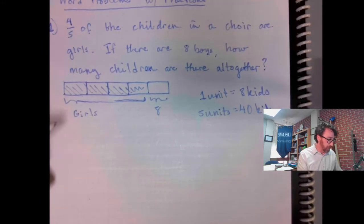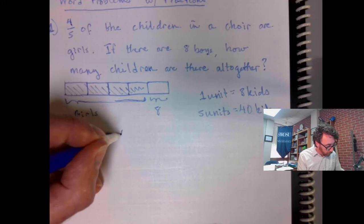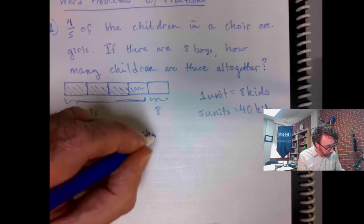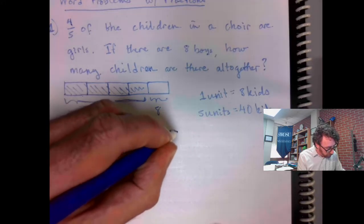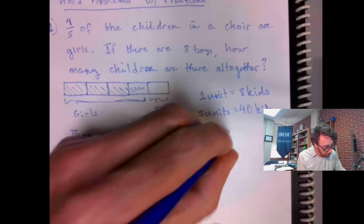That's 40 kids. Our sentence is there are 40 children all together.